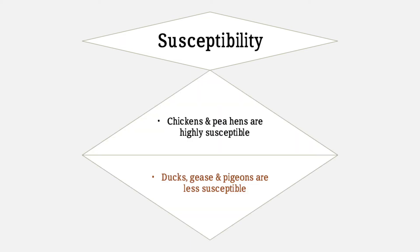Regarding susceptibility, chickens and peahens are highly susceptible organisms, while ducks, geese, and pigeons are less susceptible.